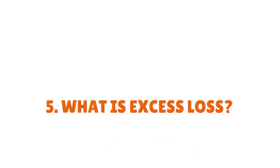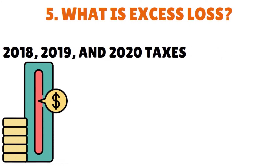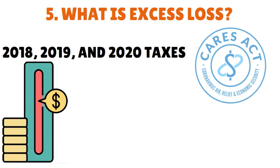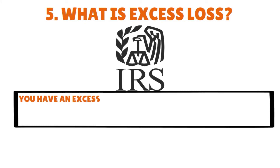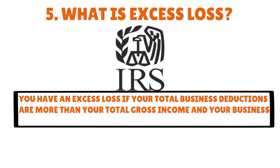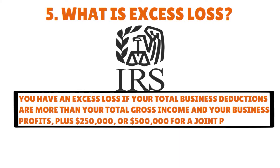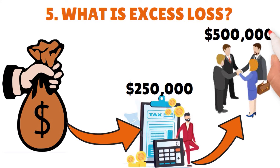The limits on excess business losses have been dropped for 2018, 2019, and 2020 taxes thanks to the CARES Act, but these excess business losses will be effective again for 2021 taxes. The IRS says you have an excess loss if your total business deductions are more than your total gross income and business profits, plus $250,000 — or $500,000 for a joint return. In other words, taking any loss more than $250,000 for a single taxpayer or $500,000 for a joint return is considered excess, and that excess amount cannot be taken as a loss on your tax return for the year.